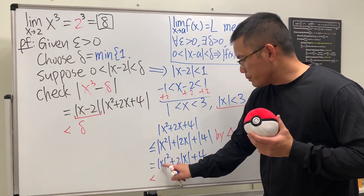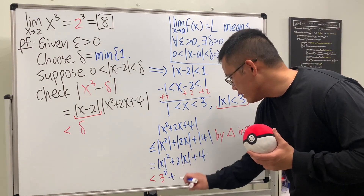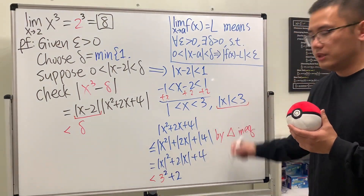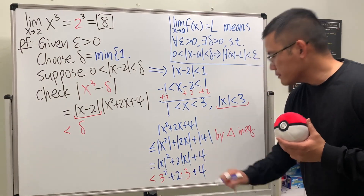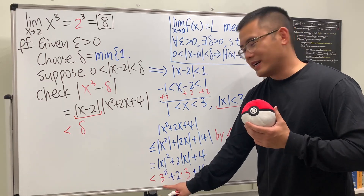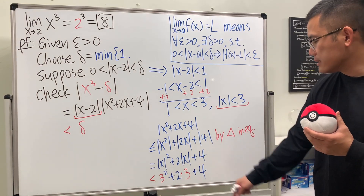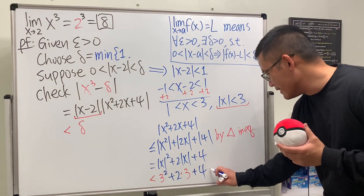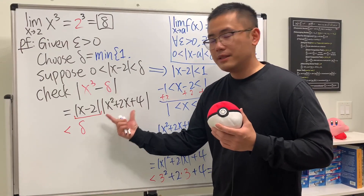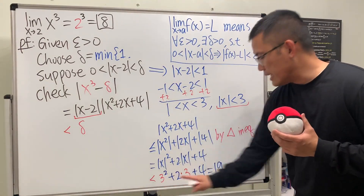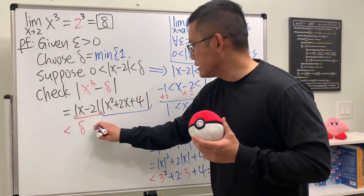Since absolute value of x is less than 3, we replace it with 3: we get 3 squared plus 2 times 3 plus 4, which is 9 plus 6 plus 4 equals 19. So absolute value of x squared plus 2x plus 4 is less than 19.